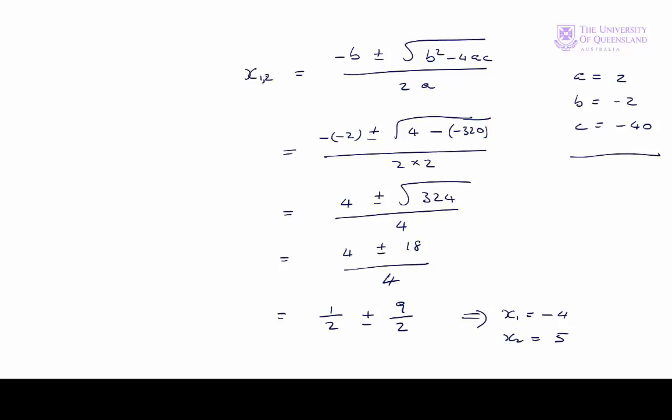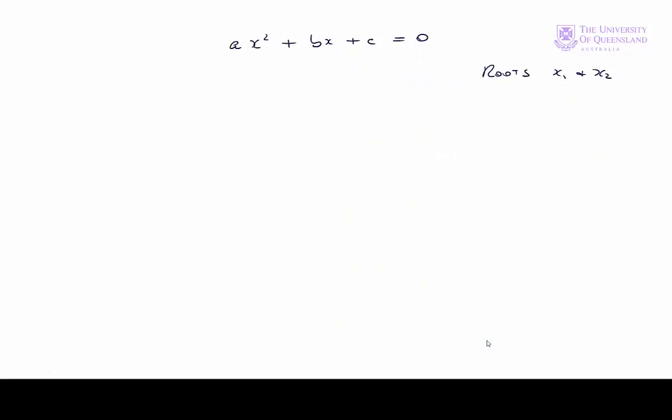Those are our two solutions, the roots of the quadratic equation. Now let's factorize it. Remember for our general form of the quadratic equation with roots x1 and x2, the factorized form will be a times x minus x1 times x minus x2 equals 0.